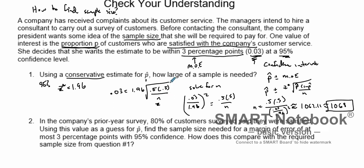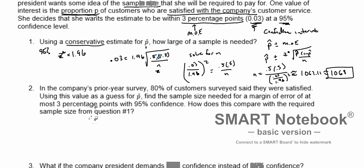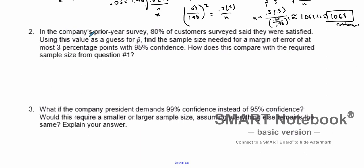All right, so our n value is about 1068 customers. Now let's try another example. In a company's prior year survey, 80% of the customers surveyed said they were satisfied. Using this value as a guess for p-hat, find the sample size needed for a margin of error of three percentage points with a confidence level of 95%. So we have a p-hat value of 0.8.